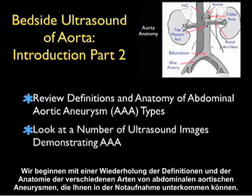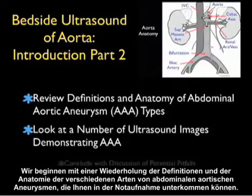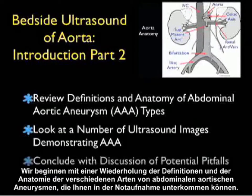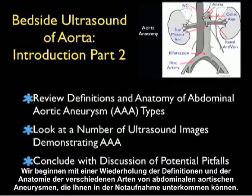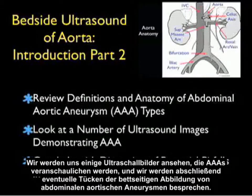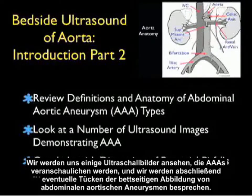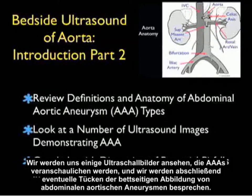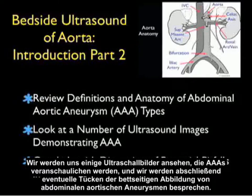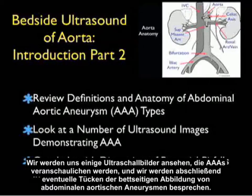We'll begin with a review of the definitions and the anatomy of the types of abdominal aortic aneurysms that you may encounter in the emergency department. We'll look at a number of ultrasound images demonstrating AAAs, and we'll conclude with a discussion of the potential pitfalls in bedside imaging of an abdominal aortic aneurysm.